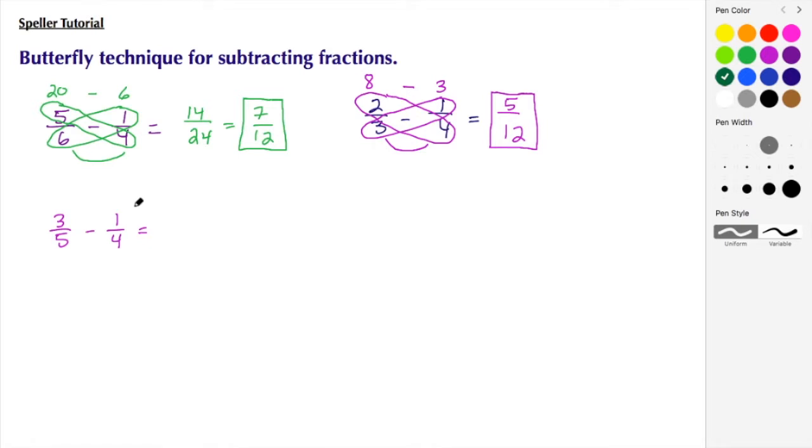Again, we're going to do this cross multiplying: 1 times 5, and that's going to give me a product of 5, and 3 times 4 is going to give me a product of 12. So here I have 12 minus 5, which gives me 7, and then I multiply my denominators, 5 times 4 to give me 20. So here I see the difference is 7/20.